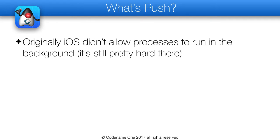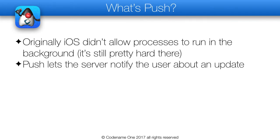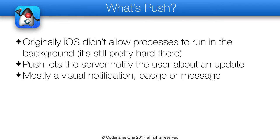iOS didn't support background tasks and polling was a big battery drain. Push was offered as a workaround — it allowed developers to notify the user that something happened and even change a numeric badge on an icon. Push is initiated by your server to notify a device that something happened. This is mostly a matter of user interface like a message or a visual badge. You can send a hidden push and a hidden payload within the visual message, but the core push notification is a message to the end user.